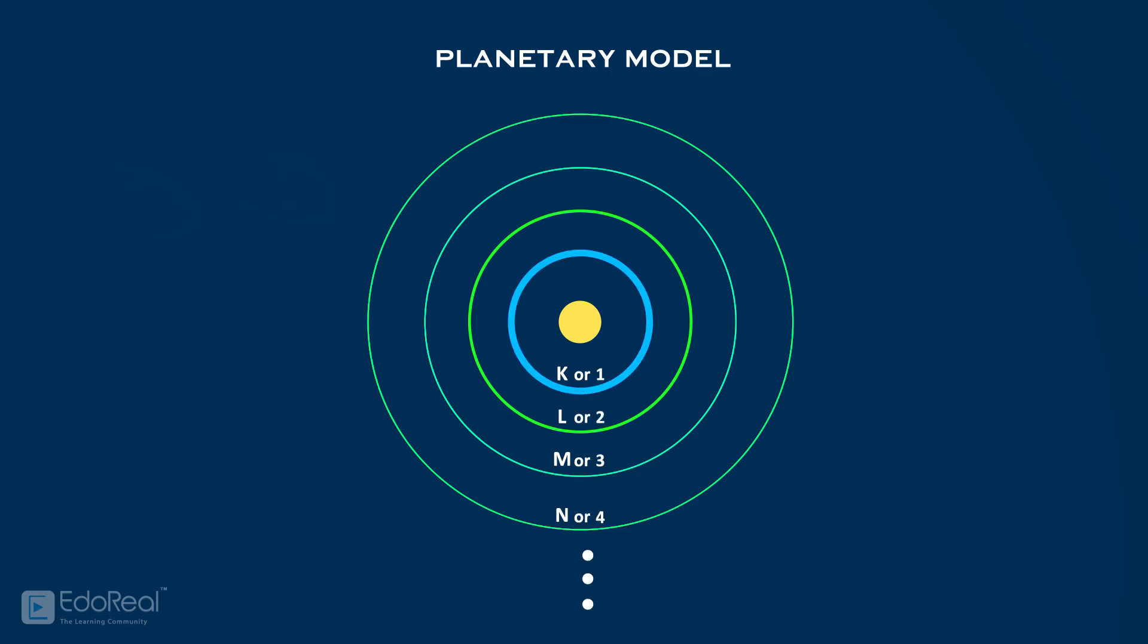The K-orbit or first energy level represents s orbital with 2 electrons.